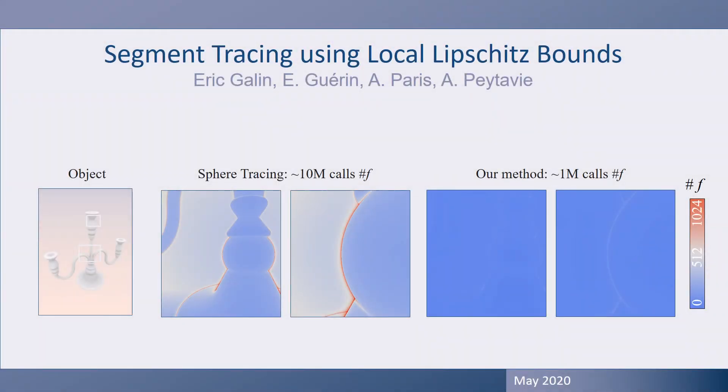Hi everyone, and welcome to this session. I am going to present segment tracing, which is a new algorithm for computing the intersection between a ray and a procedurally defined implicit surface.